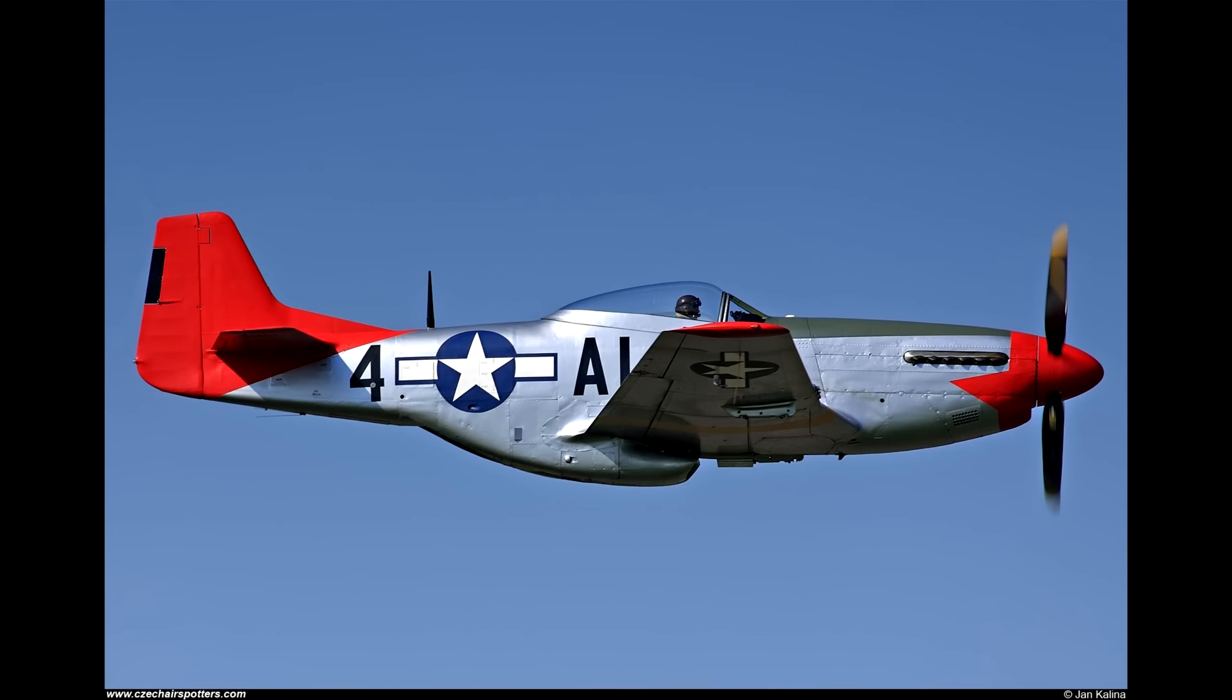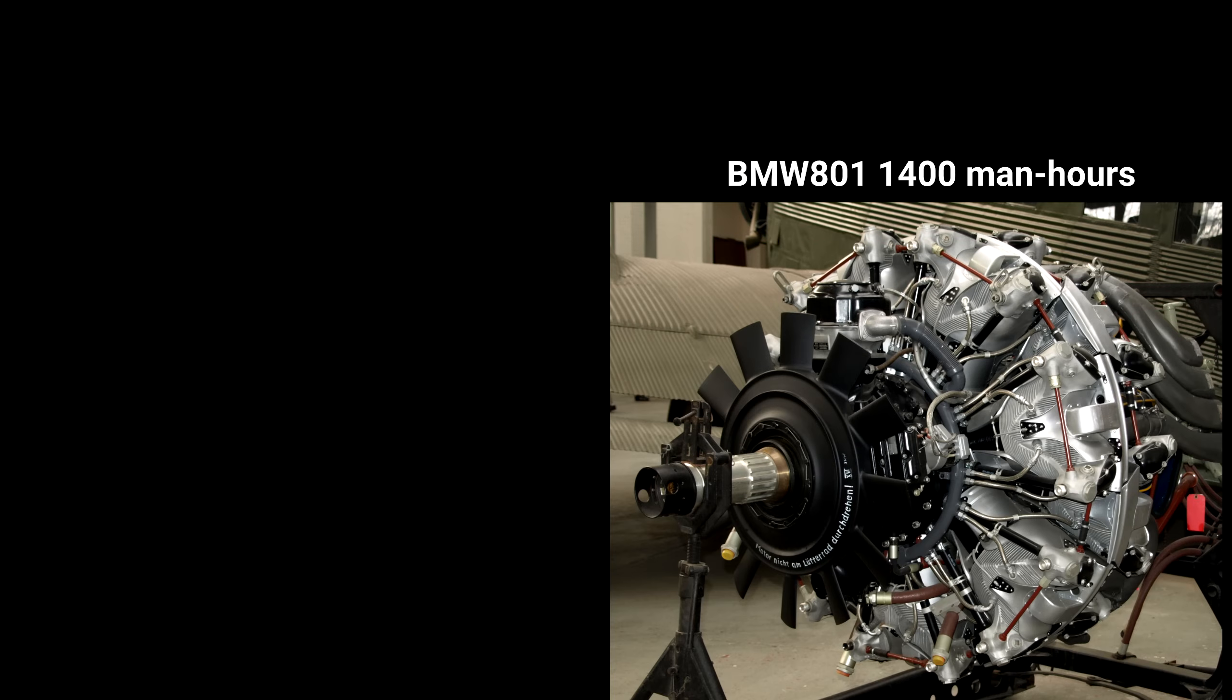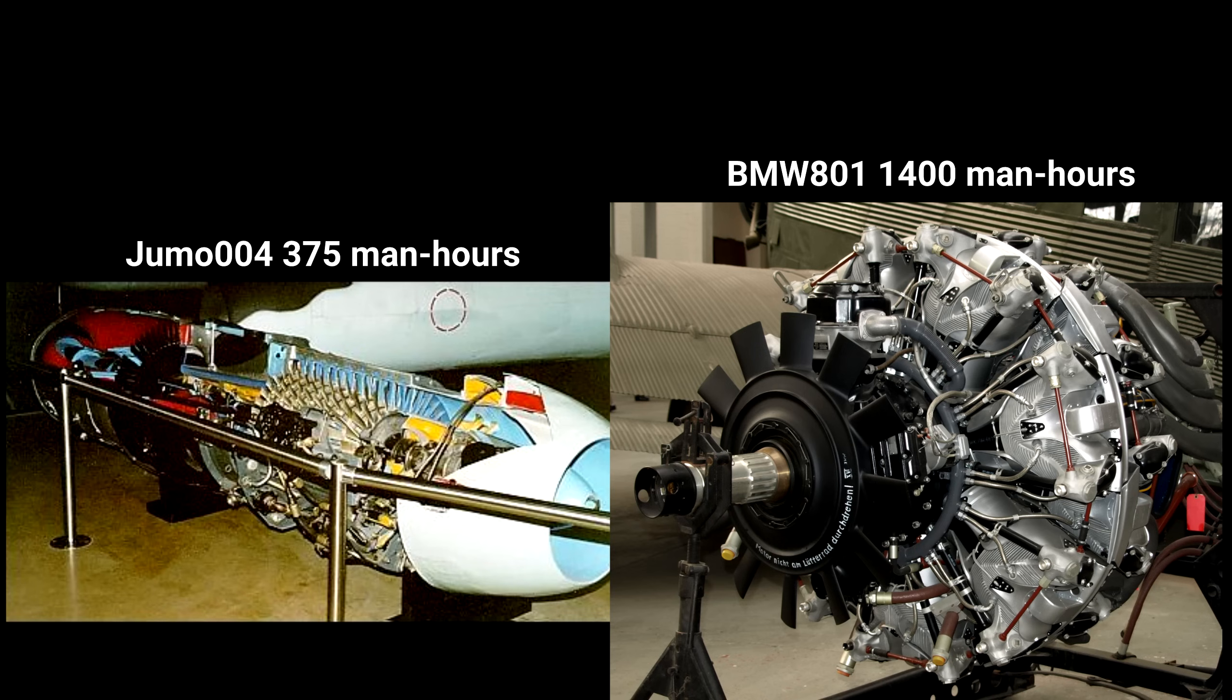Last, but not least, a fact that may come as a surprise to you is that it actually took nearly 4 times longer to make a BMW 801, the radial engine on the Focke-Wulf, than the Jumo 004, with 375 man-hours for the Jumo and 1400 man-hours for the BMW. The Jumo 004 required less skilled labor as well, which makes a big difference in mass production capability.